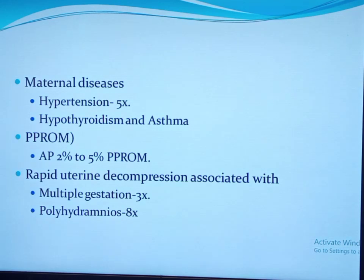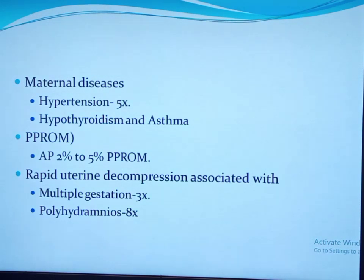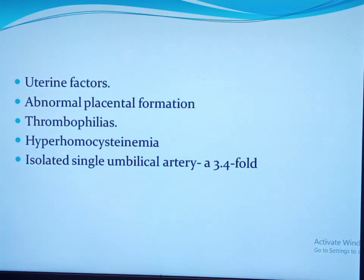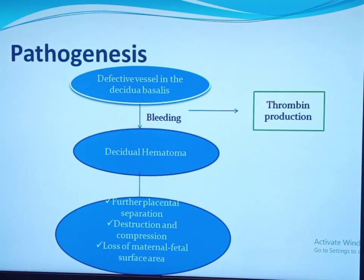Compared with singletons, twins have three times higher risk of placental abruption. The commonest time for abruption in twin pregnancies is after delivery of the first twin. Polyhydramnios also increases the risk due to rapid amniotic fluid passage causing uterine decompression — therefore controlled amniotomy is recommended. Uterine anomalies, intrauterine synechiae, and uterine scars increase the risk due to suboptimal placental implantation. Thrombophilias and isolated single umbilical artery are additional risk factors.